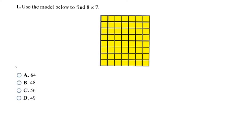The first model you might see is called an array, which looks like a section of grid paper blocked off. An 8 by 7 array means that you are going to have seven rows, and each row is going to have eight blocks. You could also think of it as eight rows with each one having seven blocks in them.